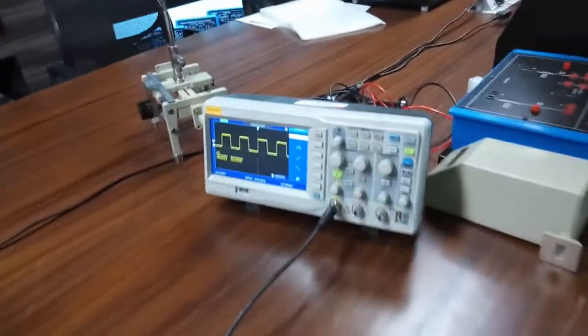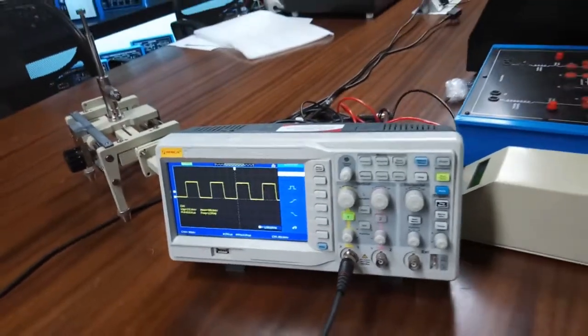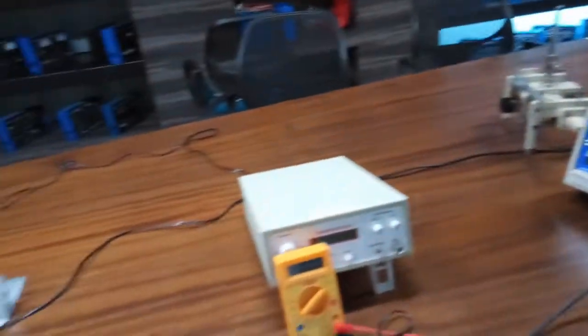To get the reading, I have set this to the maximum voltage around 200. Now replace this CRO with the multimeter.